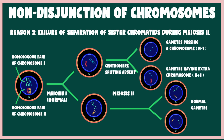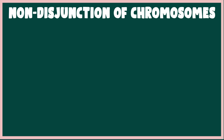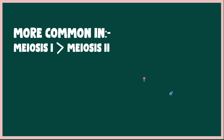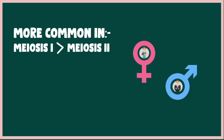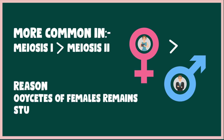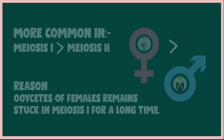Even though both cases represent non-disjunction, meiosis 1 is more susceptible than meiosis 2 and is commonly observed in females above the age of 40 years. The reason is that oocytes of older women remain arrested in meiosis 1 for a very long period of time, and the meiotic spindles of older oocytes are less able to hold the bivalents together.